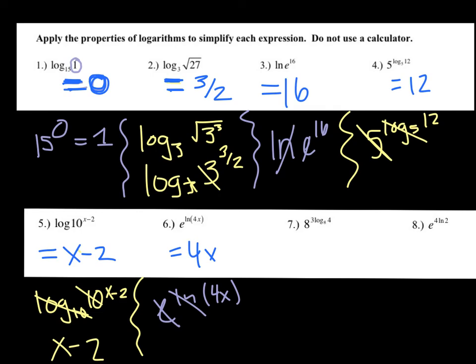Number seven: 8 to the power of 3 times log base 8 of 4. The entire log expression is the exponent. Our property says the coefficient 3 in front of the log becomes the exponent, so this becomes 8 to the exponent of log base 8 of 4, to the one-third. Because the base of the exponent is 8 and the log has base 8, they cancel, and we're left with 4 to the third power.